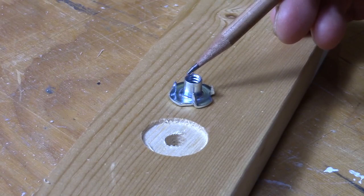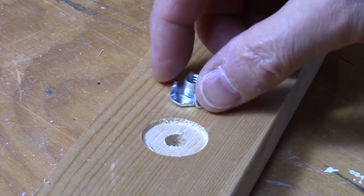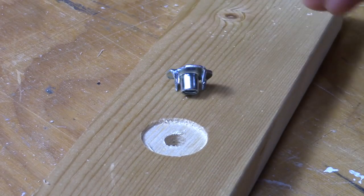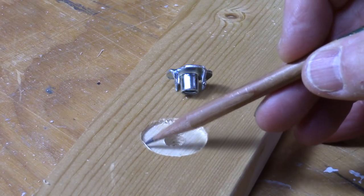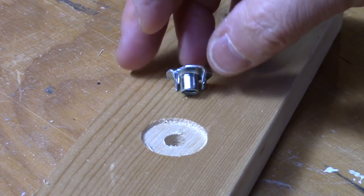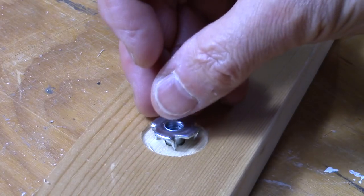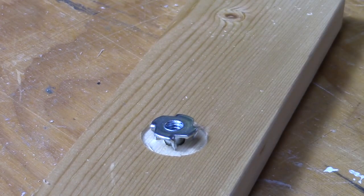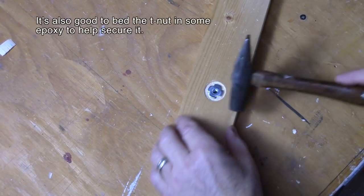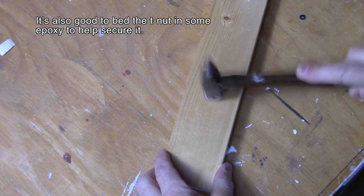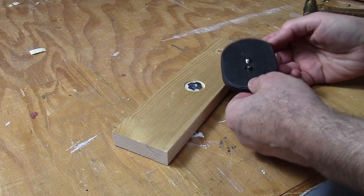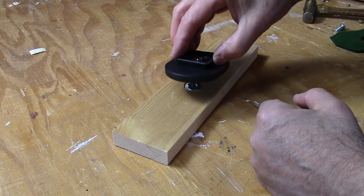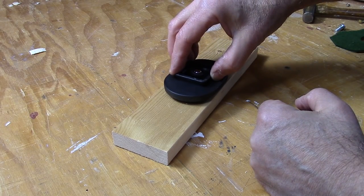You have to drill a 5 sixteenths hole for the shaft of the T-nut. And then also you have to recess it a little bit just to compensate for the thickness of that T-nut. Because once you hammer the T-nut down into place, you want that T-nut to be perfectly flush with the wood. That way the mounting base of your tripod will also be flush with the wood and it won't rock back and forth.